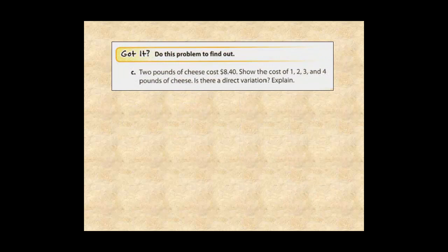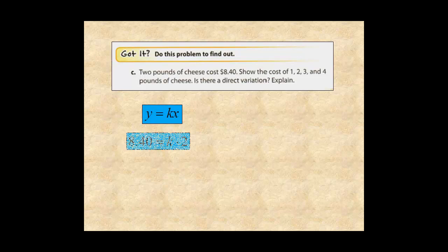If you think you've got it, pause the video and try this problem. Given that 2 pounds cost $8.40, begin with y equals kx. Fill in y equals 8.40 and x equals 2. If you divide by 2, you can see that the constant of variation is 4.2, and the equation is y equals 4.2x.